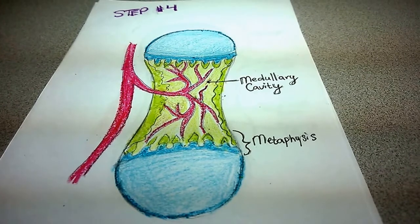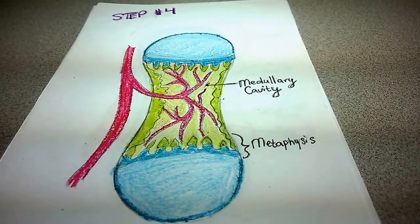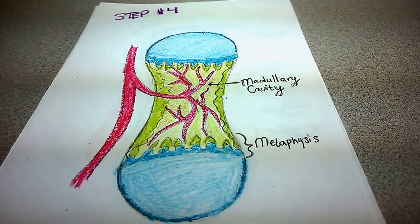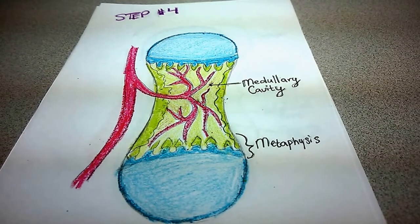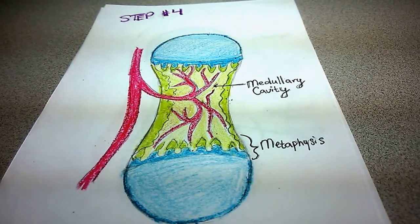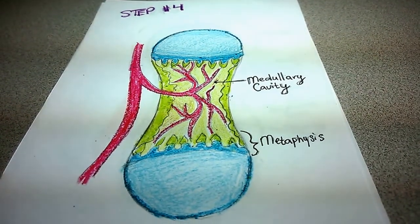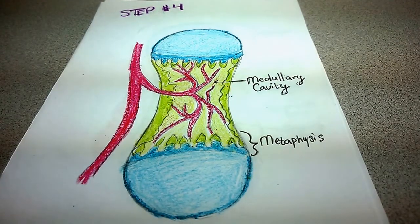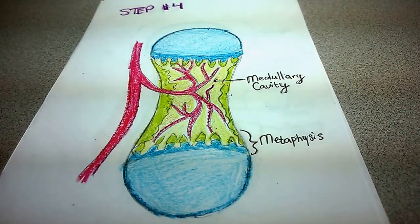Step four: As a child gets older, remodeling of the bone takes place and creates a true medullary cavity inside the diaphysis. Bone works its way to the epiphyseal plate and begins engaging and converting that cartilage. It's also important to notice the metaphysis. It is where the diaphysis and the epiphysis connect.